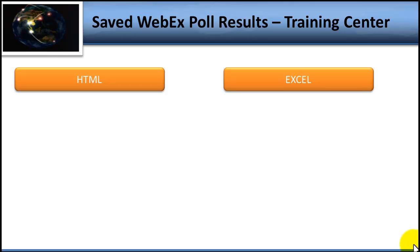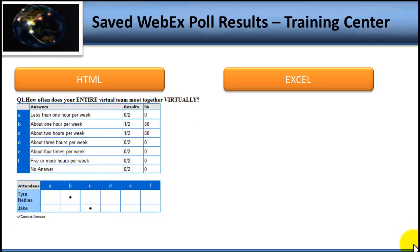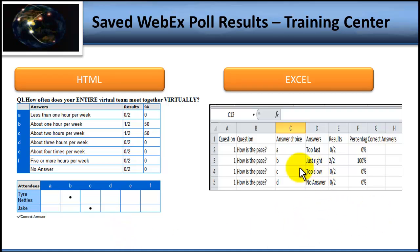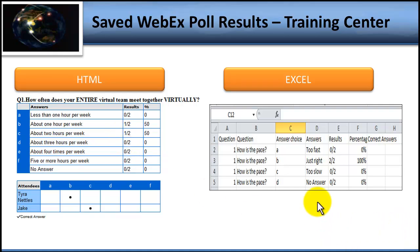Look at the wonderful feedback you'll get if you save the poll results in Training Center or Event Center. You'll receive in your folder for that particular meeting an HTML version of any poll result that you save, and that same poll result will also be shown in an Excel spreadsheet. Every answer can be tracked back to the individual, so we know how many people responded, and that Tyra said B, and Jake said C. You can also do the same thing in the Excel spreadsheet.